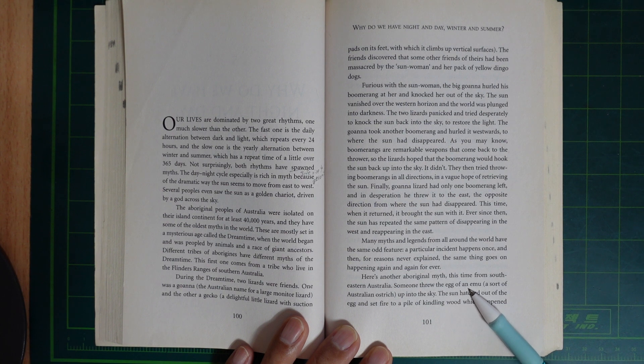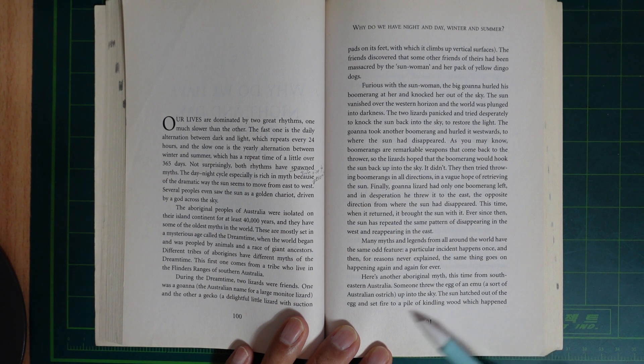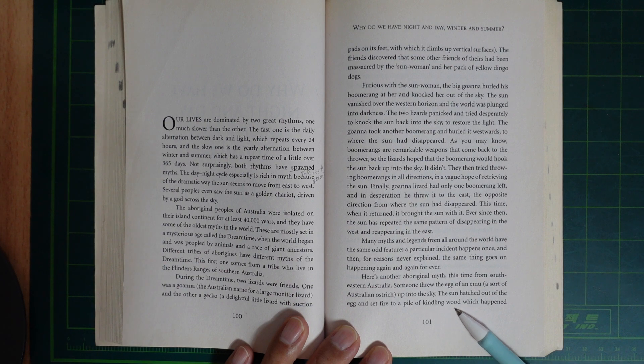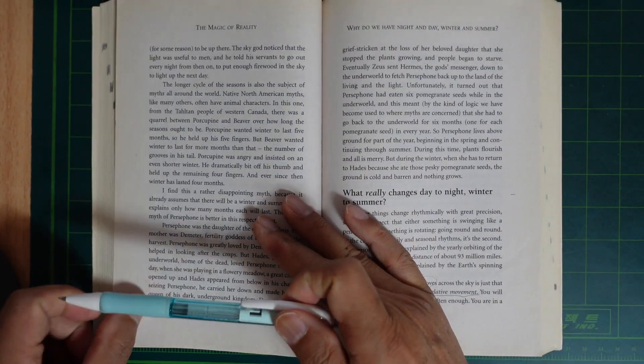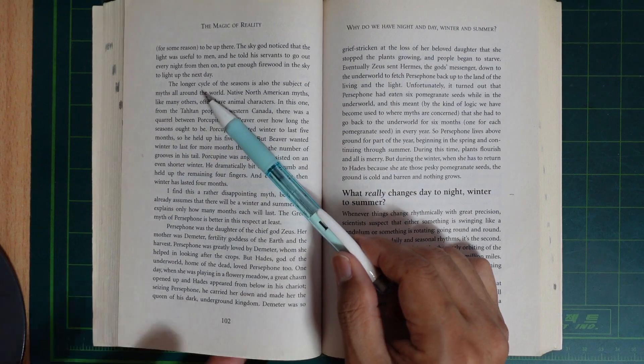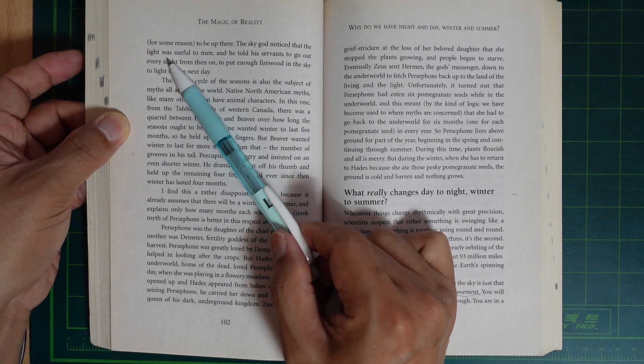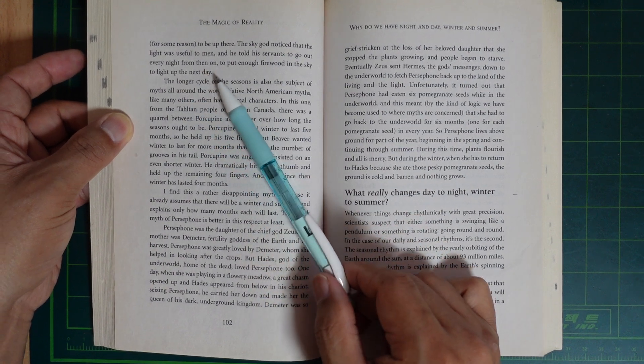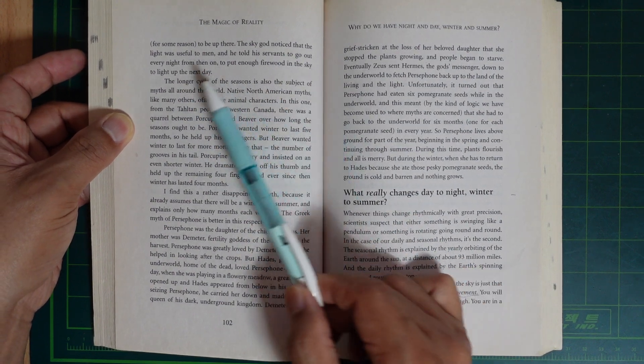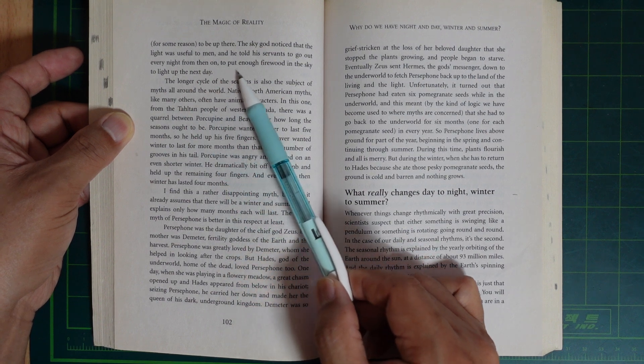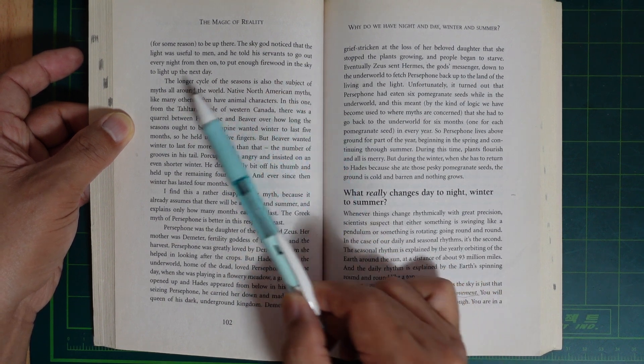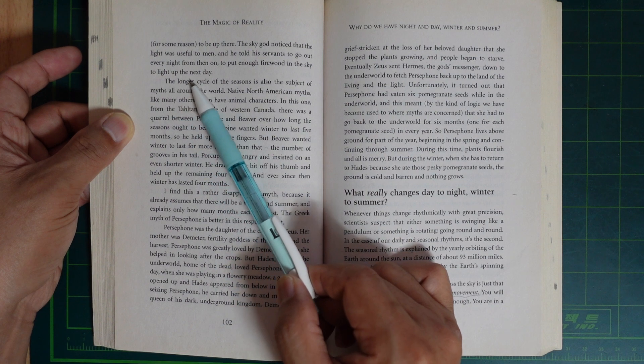Someone threw the egg of an emu, a sort of Australian ostrich, up into the sky. The sun hatched out of the egg and set fire to a pile of kindling wood, which happened for some reason to be up there. The sky god noticed that the light was useful to men and he told his servant to go out every night from then on to put enough firewood in the sky to light up the next day.